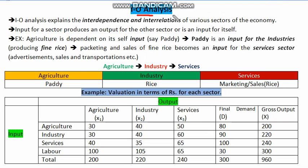Today I'll talk a little bit on input-output analysis. With the help of input-output analysis, we try to understand the interdependency or the interrelationships that exist between the different sectors of the economy. For example, the agriculture sector, the industrial sector, and the services sector. The agriculture sector is an input for the industrial sector, or the industrial sector is dependent on the agriculture sector.